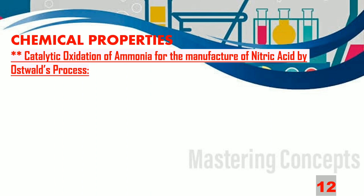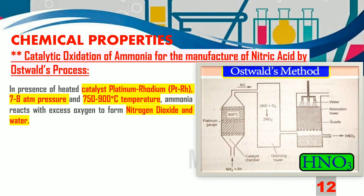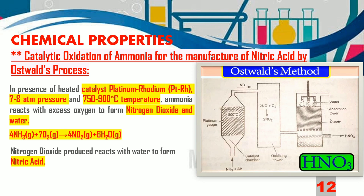Next, we will learn about the catalytic oxidation of ammonia for the manufacture of nitric acid by Oswald's process. A platinum-rhodium catalyst is used, the pressure is maintained between 7 to 8 atmospheres, and the temperature is between 750 to 900°C. In the catalyst chamber, ammonia first reacts with oxygen to form nitric oxide, which is further oxidized to nitrogen dioxide. Alternatively, ammonia can directly react with excess oxygen to produce nitrogen dioxide. The nitrogen dioxide then reacts with water to form nitric acid.